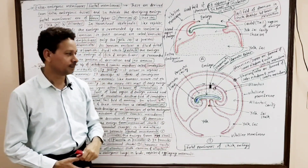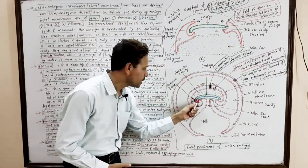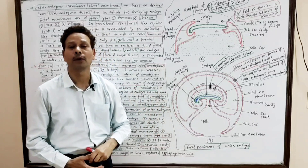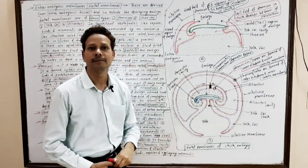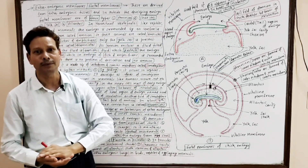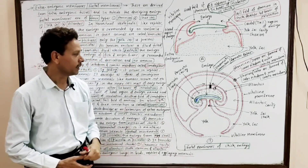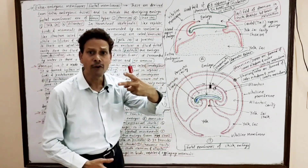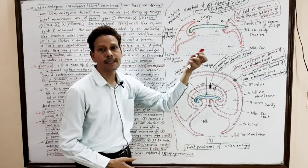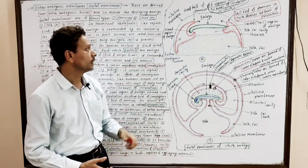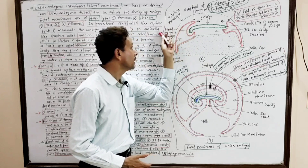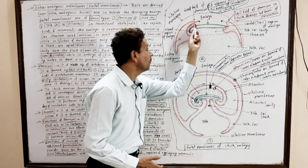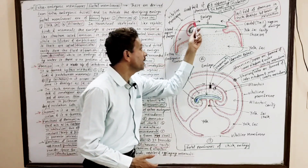Now I will discuss the amnion. In this embryo, the anterior region represents the head or cephalic region, while the posterior end is the tail or caudal region. Formation of the amnion occurs in two ways: either by folding or cavitation. In the chick embryo diagram, the anterior head region and the posterior caudal tail region are visible.